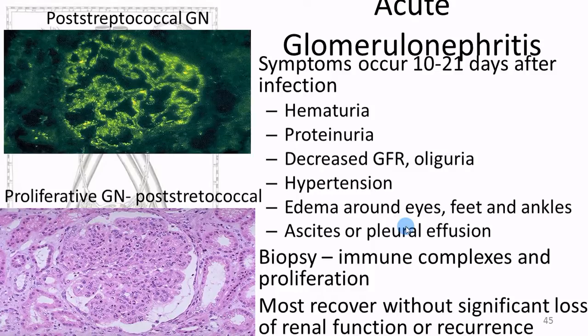At that point, hematuria and proteinuria appear — the pressure has blown right through the glomerulus, so you're seeing protein and blood in the urine.